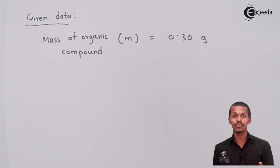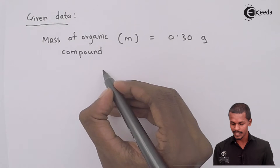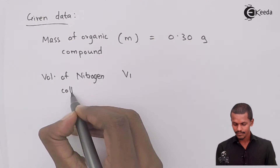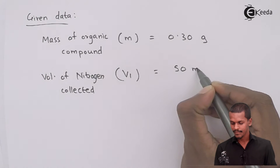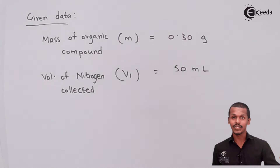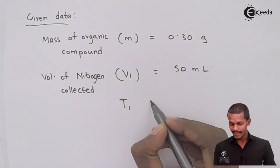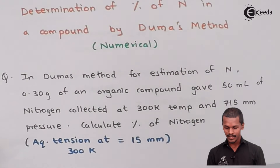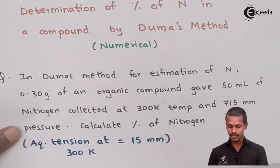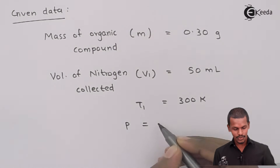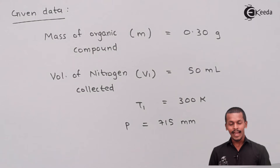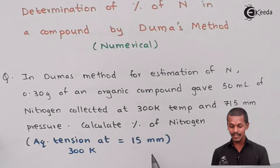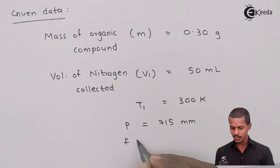The volume V1 is not at STP but at the experimental condition provided. The temperature at which the nitrogen was collected is T1 = 300 Kelvin. The external pressure maintained is P = 715 mm Hg. The aqueous tension at 300 Kelvin is 15 mm, so we write aqueous tension F = 15 mm.